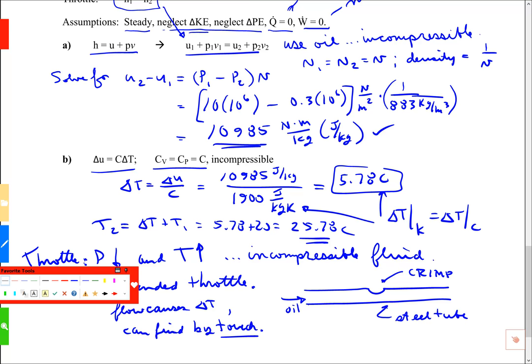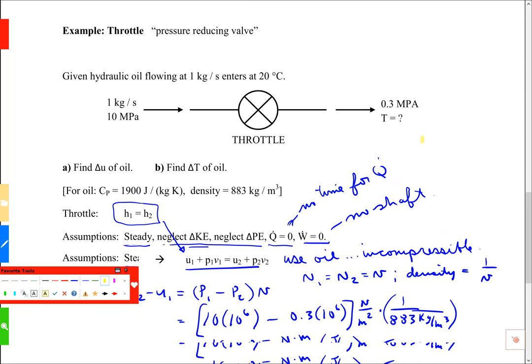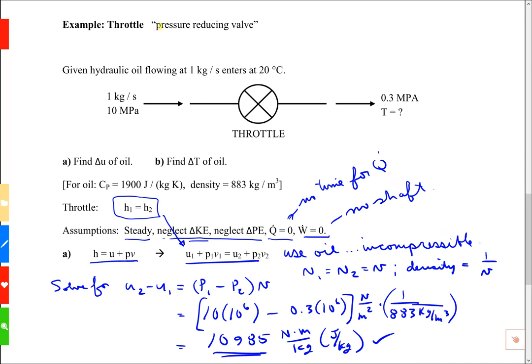All right, let's recap. We're looking at a throttle. Another name for a throttle is a pressure reducing valve. The defining process for a throttle is that enthalpy is unchanged. And we can find internal energy if we remember the definition of enthalpy as U plus PV.